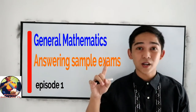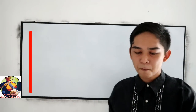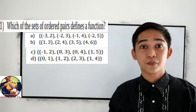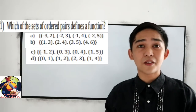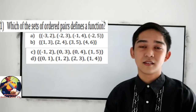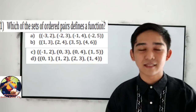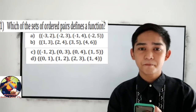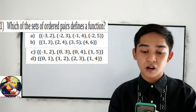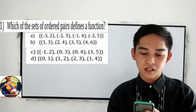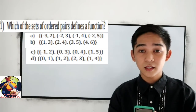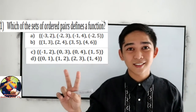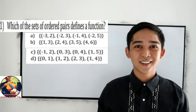Let's start with question number one: Which of the following sets of ordered pairs defines a function? We define a function if there is no repeated x-coordinate. For letter A, the x-coordinates are negative 3, negative 2, negative 1, and negative 2. We notice that negative 2 is repeated twice, so letter A is wrong.